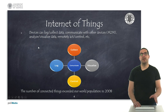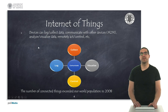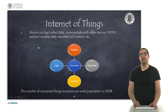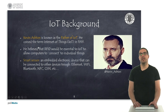A device can basically log and collect data and communicate with other devices — it's the machine-to-machine protocol. We can also use them to analyze or visualize data, or to remotely act on or control a specific device. The number of devices connected to the internet actually exceeded the world population in 2008. IoT was coined as a term in 1999 and was originally known as a smart sensor, but nowadays we call it Internet of Things.